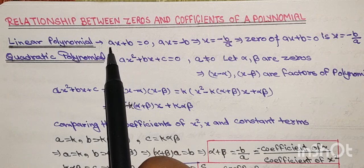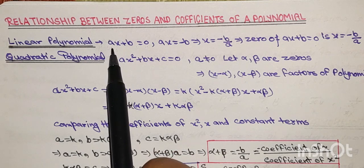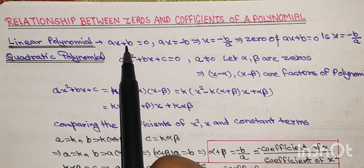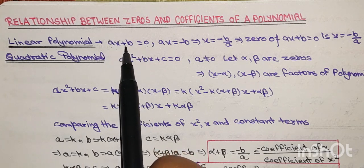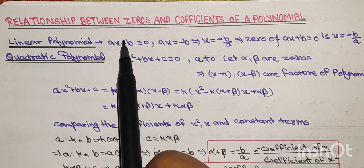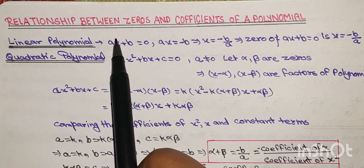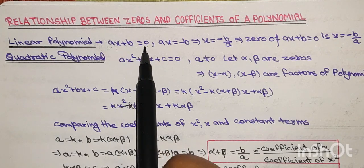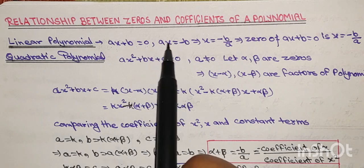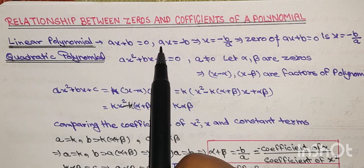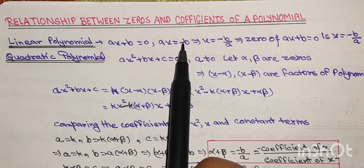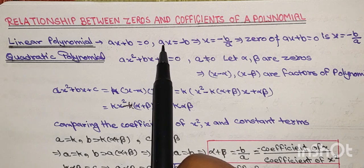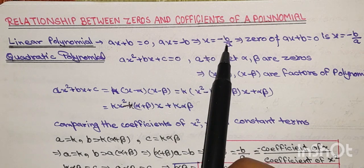Students, is polynomial ki zeros find out karni hain — means x ke place par kya value put karein ki polynomial ki value zero ke equal ho jaye. Uske liye joh expression hai usko equal to zero put karte hain. To ax plus b equal to zero, then ax equal to minus b, so x equal to minus b upon a.